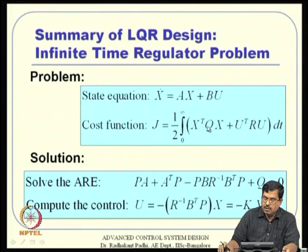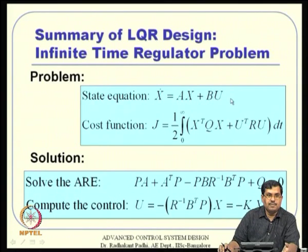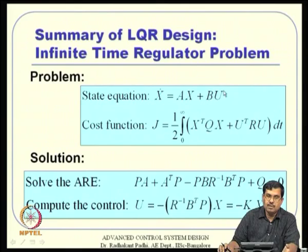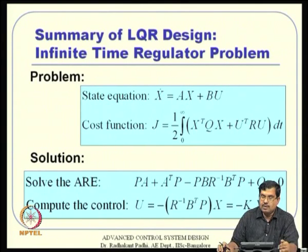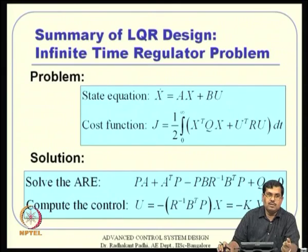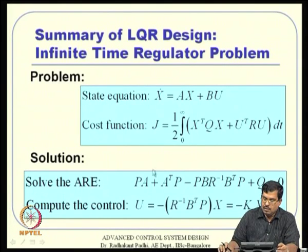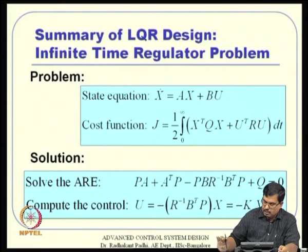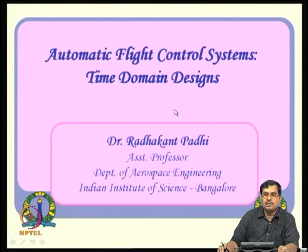The advantage of LQR over pole placement design is that you do not need to worry about whether you have a single or multiple controller inputs. For multiple inputs, LQR applies directly, whereas pole placement theory works nicely only for single-input systems; for multiple inputs you need control allocation and may lose some advantages. These are all the control design techniques studied before, just as a recapitulation.